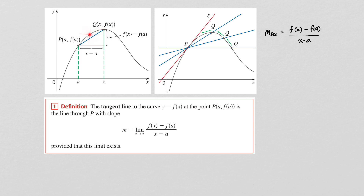Now imagine that point Q is free to move on this function. As point Q approaches point P, the secant lines through PQ start to get closer and closer to the tangent line. So if we wish to find the slope of this tangent line, we take the limit as x approaches a of the slope of the secant line. As x gets closer to a, point Q gets closer to P, and when you take the limit, you get the slope of the tangent line, provided that this limit exists.